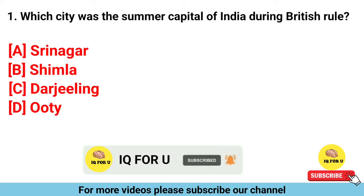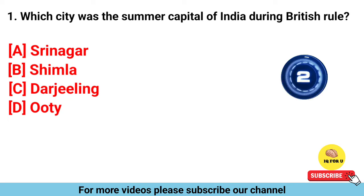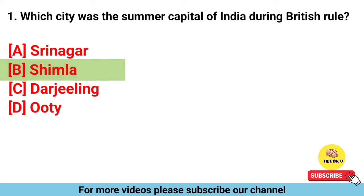Which city was the summer capital of India during British rule? Srinagar, Simla, Darjeeling, Ooty. The right answer is Simla.